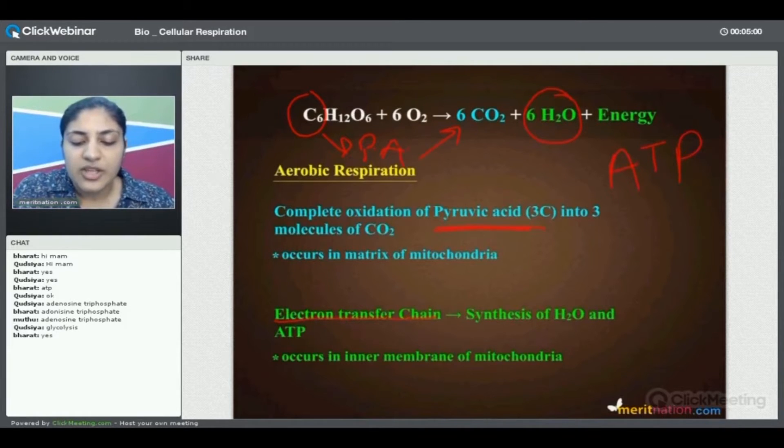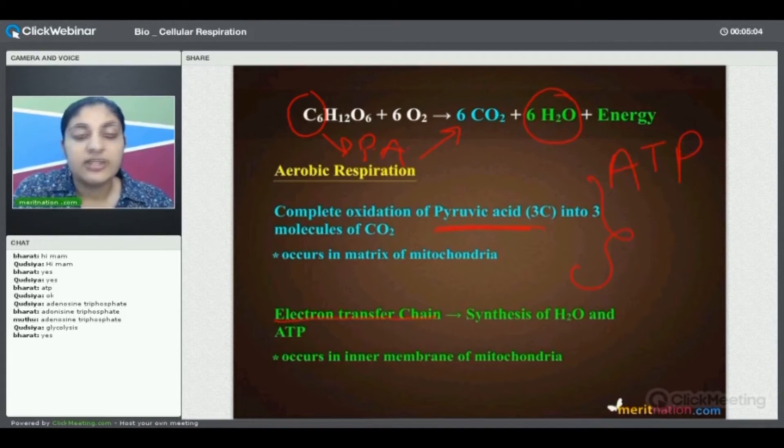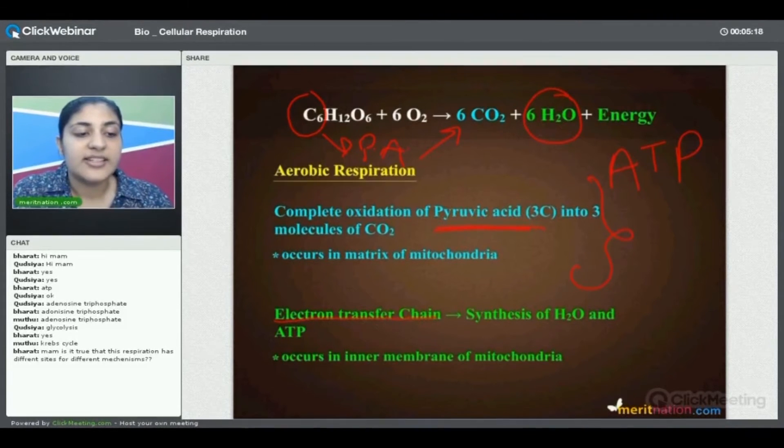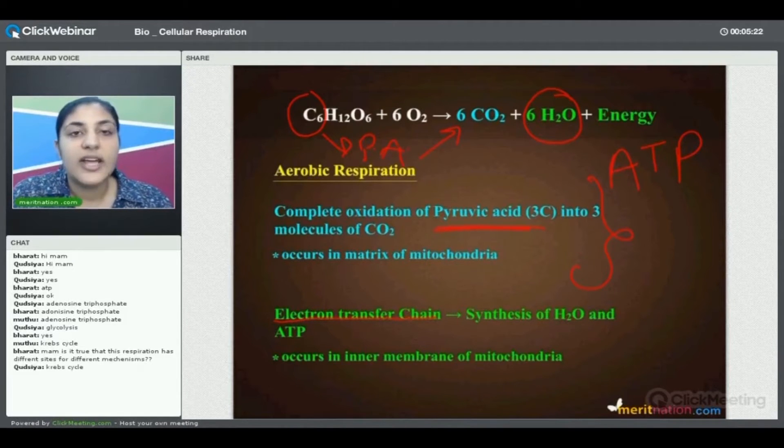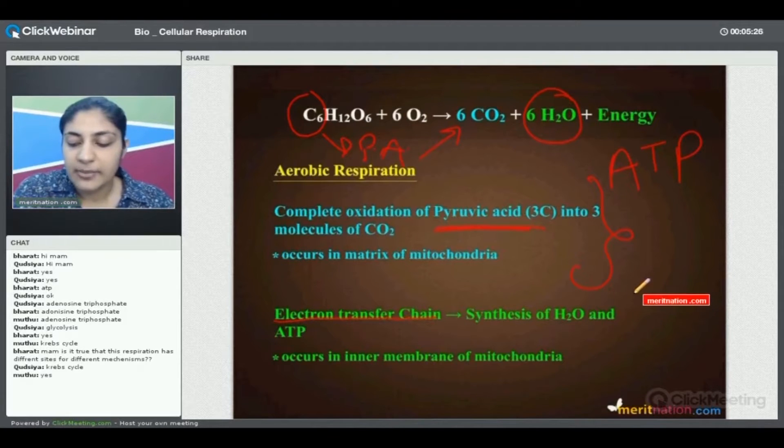Do you remember which is the name given to this step where pyruvic acid is converted into CO2? Indeed you are right, it is Krebs cycle. In fact, not only Krebs cycle, it is also known as the TCA cycle. We've studied this part, and let us come now to the electron transport chain.